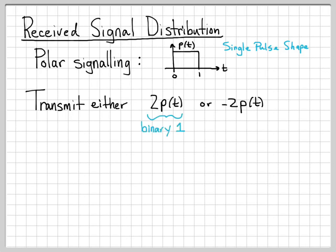I'm going to use 2P(T) for when I want to transmit a binary 1, and minus 2P(T) when I want to transmit a binary 0. So if I have binary information, this is how I communicate it to the other side of the transmission link — by sending either positive rectangular pulses or negative rectangular pulses.